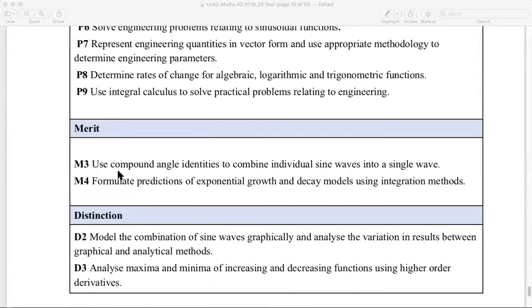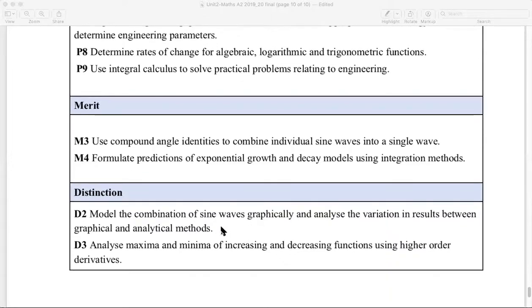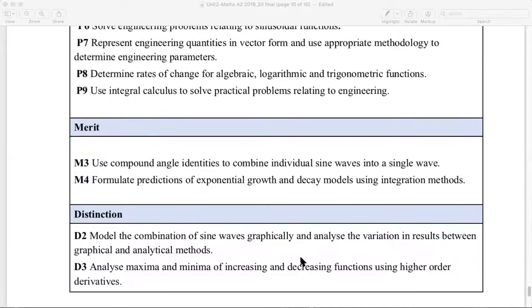And then you can extend your work for higher grades. In learning outcome 3, use the compound angle identities to combine sine waves into a single wave. In the calculus part, formulate predictions of exponential growth and decay. And then for the distinction, combine sine waves graphically and analyze the results between the two methods, and find maximum and minimum of increase and decrease in functions. So it's fairly easy for you to pick out which parts of those tasks cover those criteria.